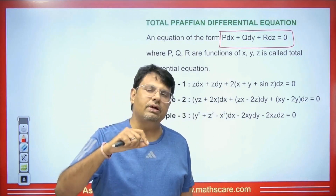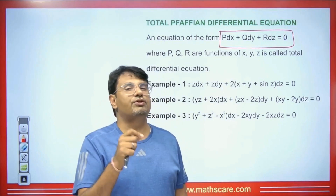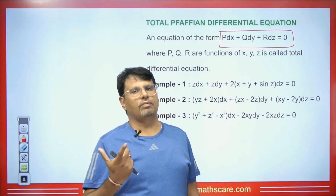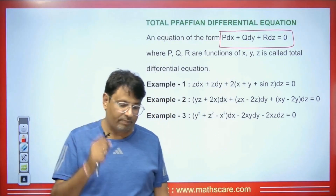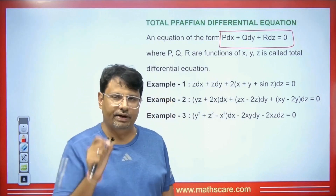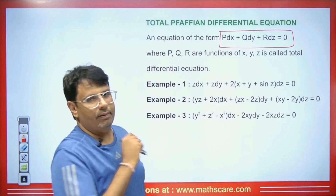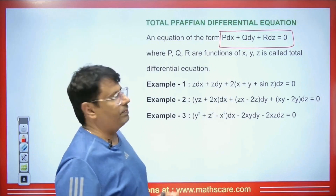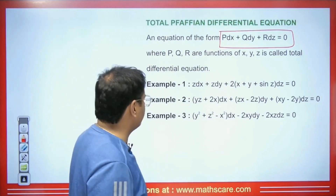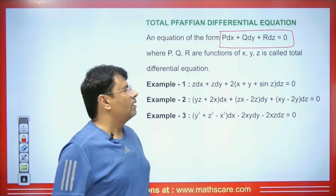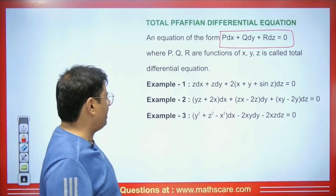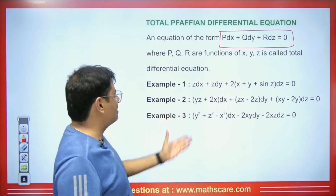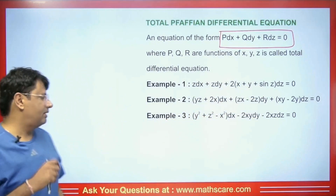Usually when we solve any given equation — especially when we apply Charpit's method, or when we apply Green's theorem or Stokes' theorem — this type of condition is encountered. P dx plus Q dy plus R dz equals 0 with P, Q, and R given as functions of x, y, z. So this equation is either a Pfaffian equation or total differential equation. For example: z dx plus z dy plus (2x plus y plus sin z) dz equals 0.